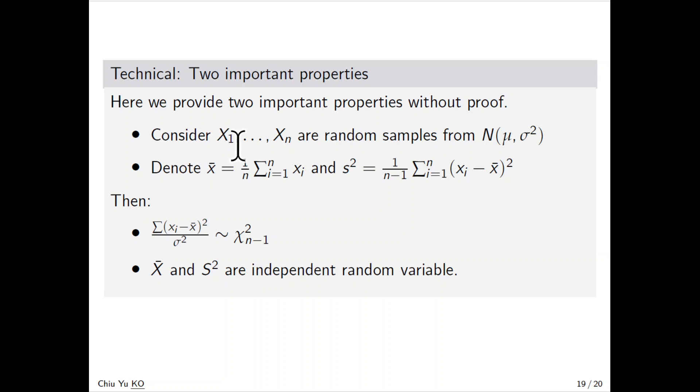First, consider random samples from a normal distribution with sample mean X̄ and sample variance s². We can show that the sum of squared differences from the mean, divided by the population variance, follows a chi-square distribution with n-1 degrees of freedom. Second, X̄ and s² are independent random variables.